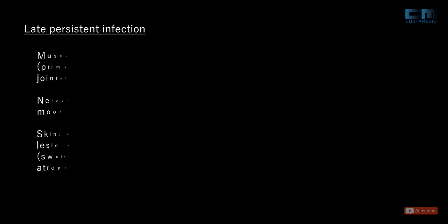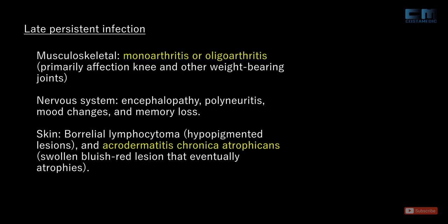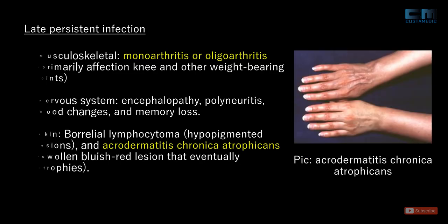The last stage is late persistent infection. This stage can develop months to years after the development of early disseminated infection, and is mostly characterized by musculoskeletal, nervous system, or skin conditions. Common musculoskeletal presentations are monoarthritis or oligoarthritis. Common nervous system manifestations are encephalopathy, polyneuritis, mood changes, and memory loss. Common skin manifestations are Borrelial lymphocytoma and acrodermatitis chronica atrophicans.